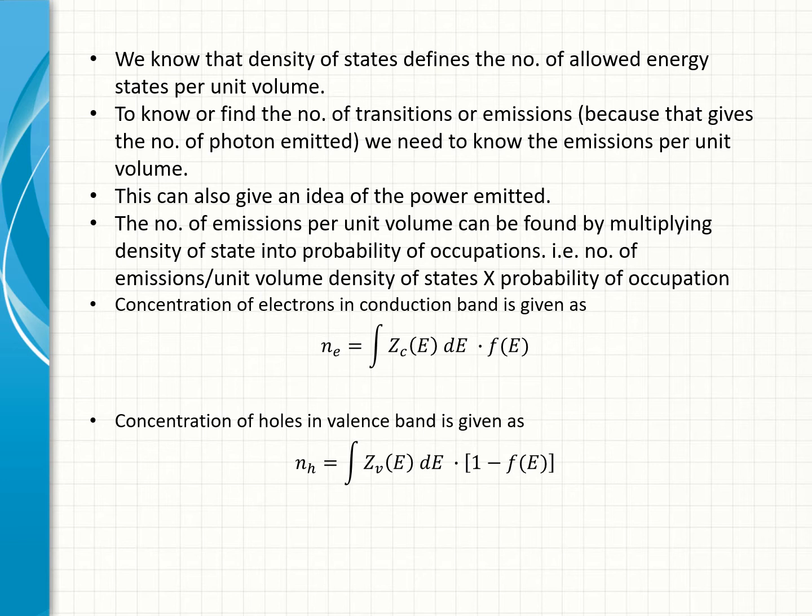The number of emissions per unit volume can be found by multiplying density of state into probability of occupations, i.e., number of emissions per unit volume equals density of states times probability of occupation. Concentration of electrons in conduction band is given as ne = ∫ Zc(E) dE · f(E). Concentration of holes in valence band is given as nh = ∫ Zv(E) dE · [1 - f(E)].